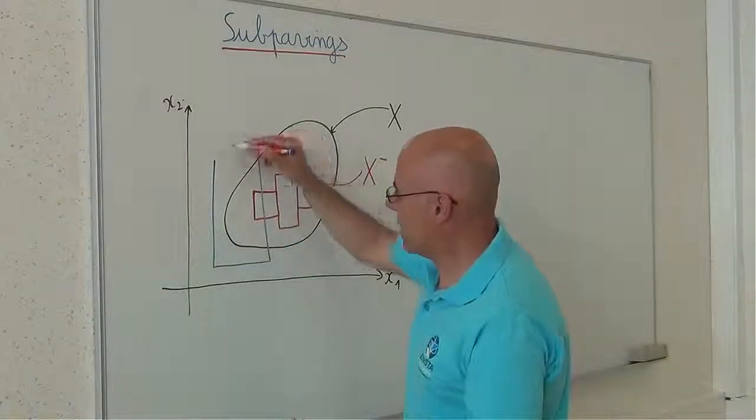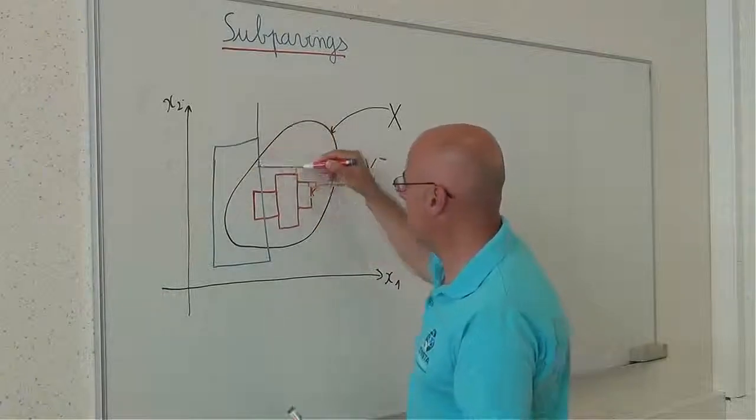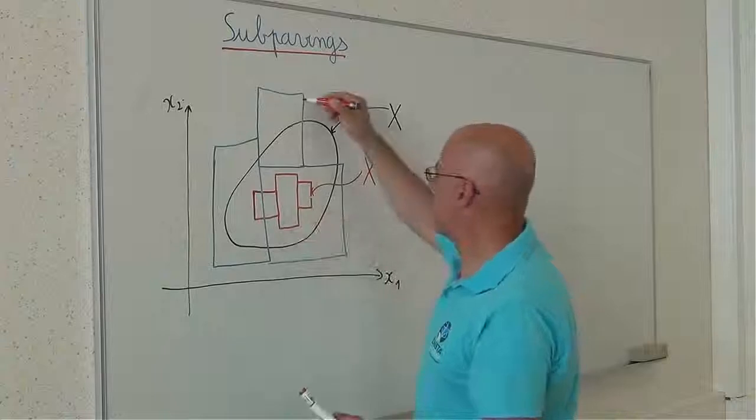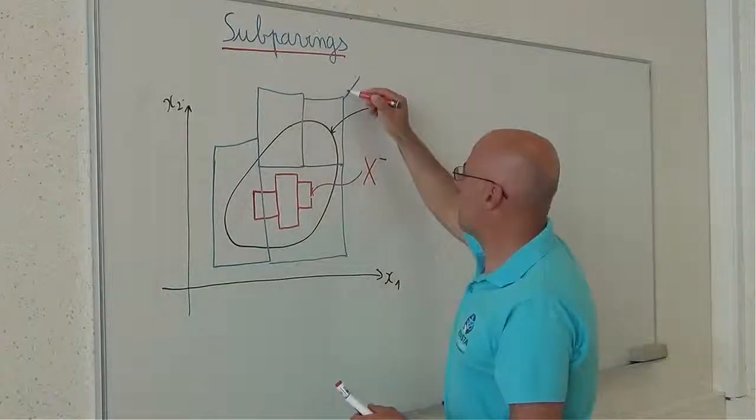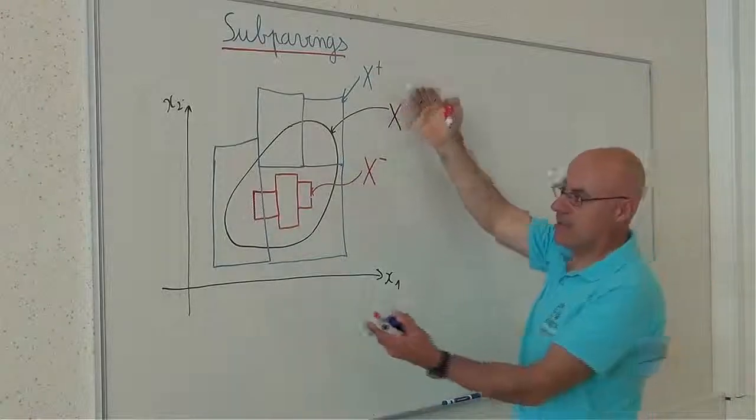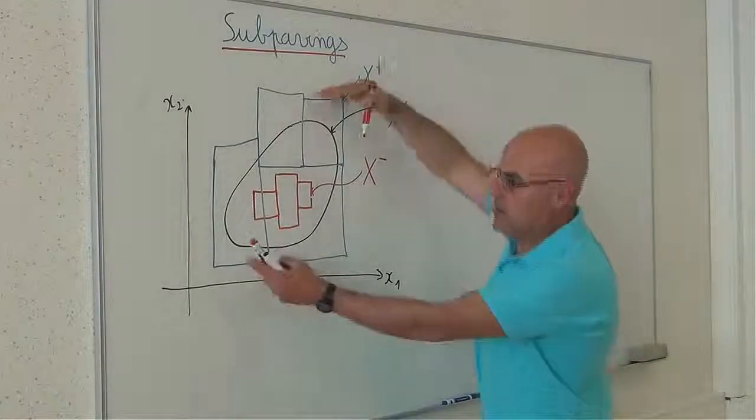For instance, if I take the blue subpaving, x plus approximates x but from outside.